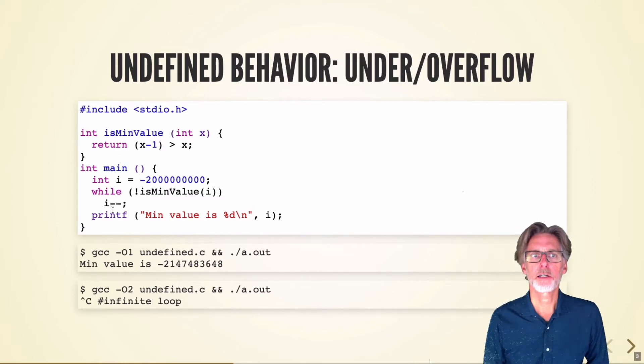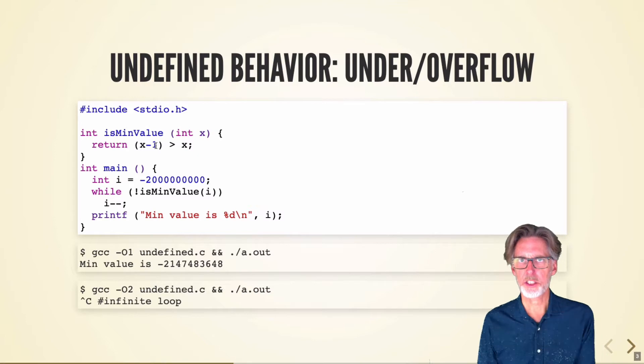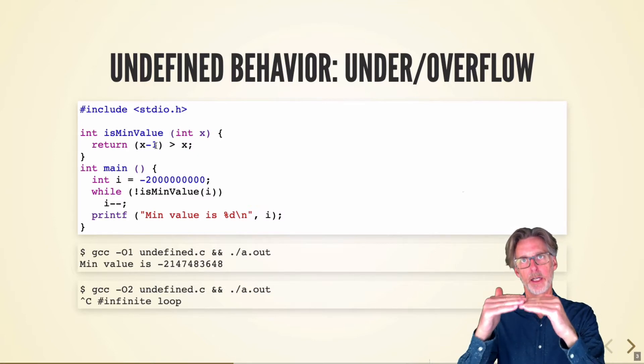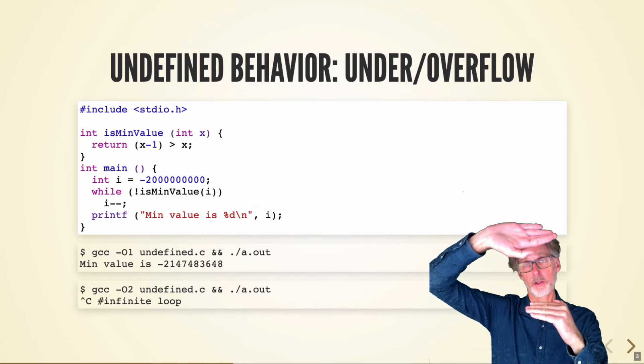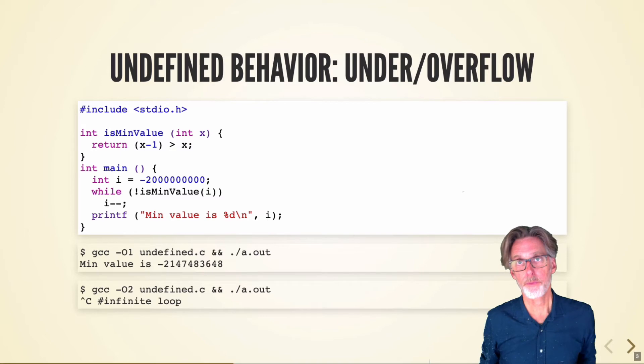Well, what's going on here is that in C, the language specifies that if you ever subtract from a number and you end up with an underflow, so wrapping around, that entire program is undefined. It can do whatever it wants. It can launch the missiles. It can do anything.